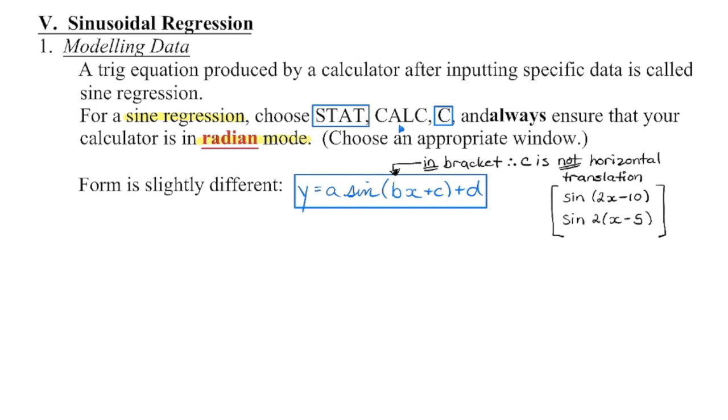We're going to take a look at sinusoidal regression. It's similar to different types of regression we've seen before, but the one difference is we have to make sure that we are in radian mode. So anytime we're performing sinusoidal regression, make sure your calculator is in radian mode.